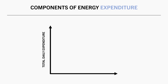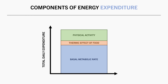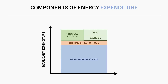There are three primary ways in which we burn energy: our basal metabolic rate, the thermic effect of feeding, and physical activity. Physical activity can also be sub-categorized into non-exercise activity thermogenesis, or NEAT for short, and intentional exercise. Basal metabolic rate typically contributes the largest amount to energy expenditure, around 60-75% in most cases. The thermic effect of feeding typically contributes the smallest, usually around 10%.